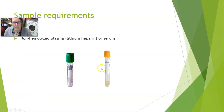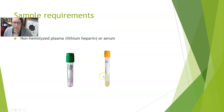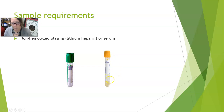For sample requirements, we need non-hemolyzed plasma, usually in a lithium heparin green top tube, or serum. Light green tops also work and contain a serum separator. Gold tops with serum separators yield serum but require complete clotting before spinning down. If you need a faster turnaround, you may want to go with lithium heparin.